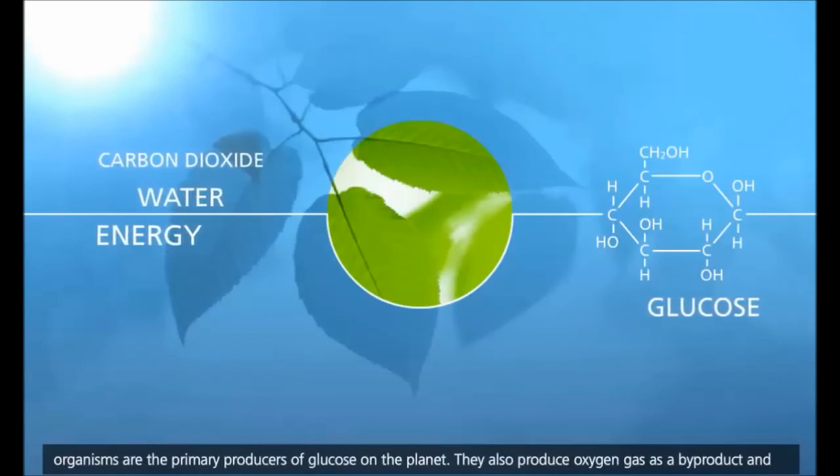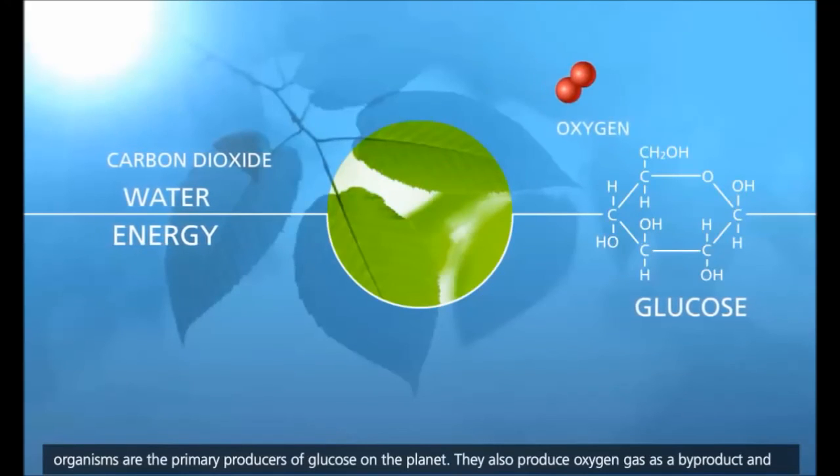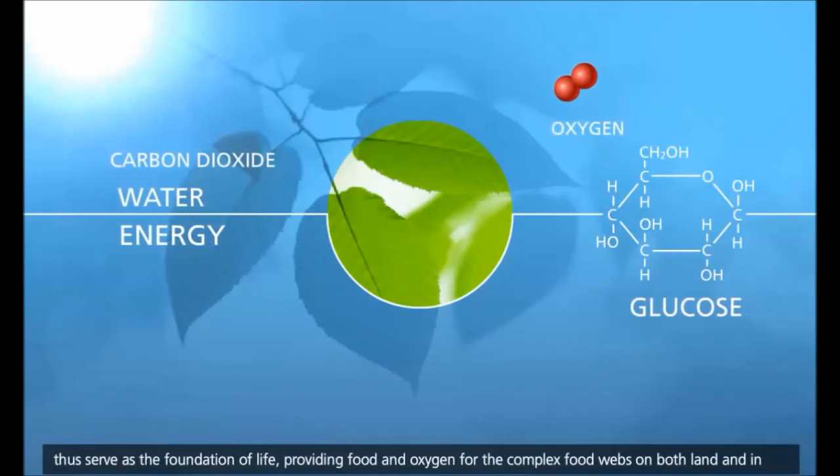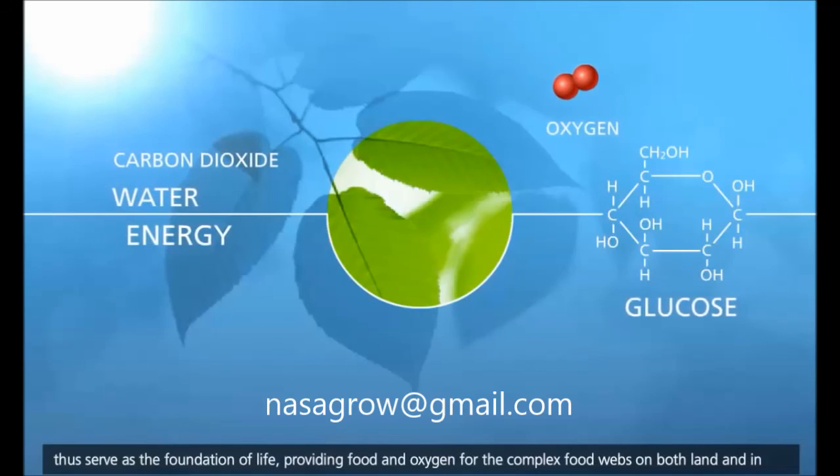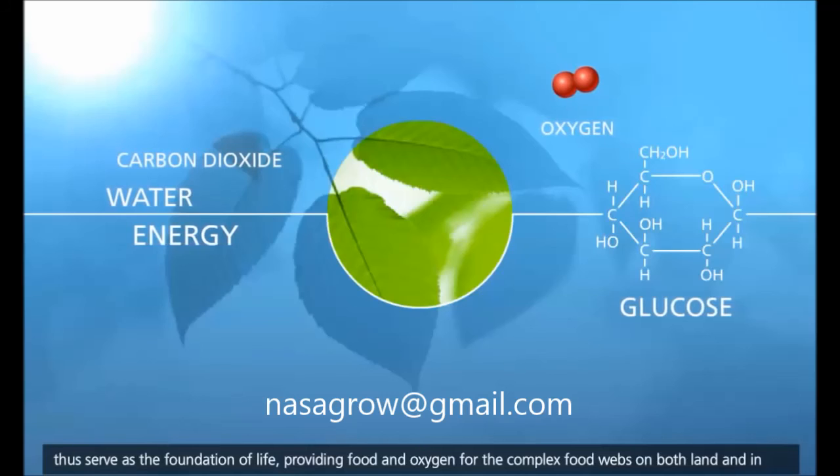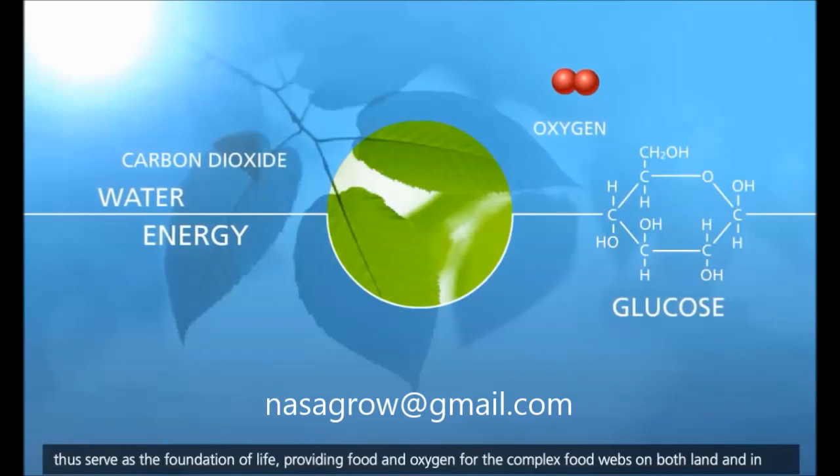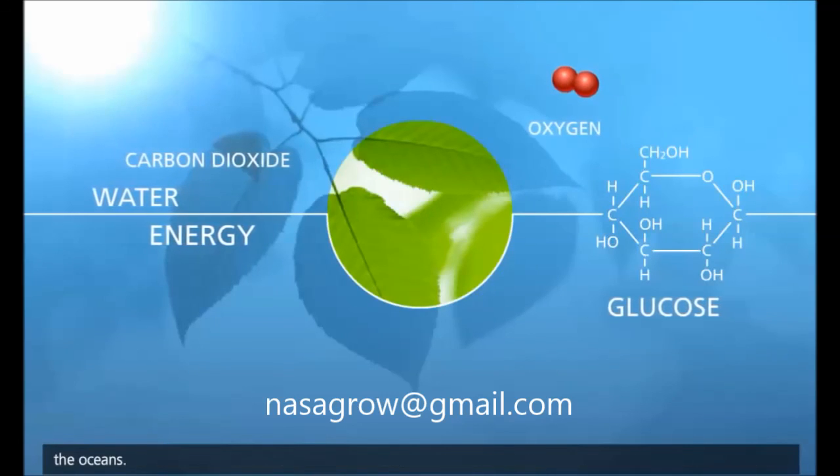Photosynthetic organisms are the primary producers of glucose on the planet. They also produce oxygen gas as a byproduct and thus serve as the foundation of life, providing food and oxygen for the complex food webs on both land and in the oceans.